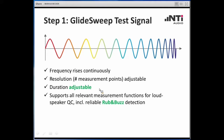When you can predict and adjust the duration of a GlideSweep and by that of the whole test, you can easily integrate it into an automated environment with a predefined cycle time — a huge advantage. The GlideSweep supports all relevant measurement functions for loudspeaker quality control, including reliable rub-and-buzz detection. The generation of audible effects in a defective loudspeaker may happen at very specific narrow-band frequencies, and by using a GlideSweep you are always on the safe side that all possible errors will be detected.